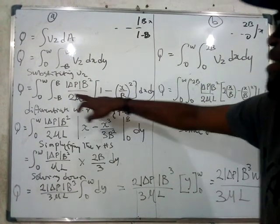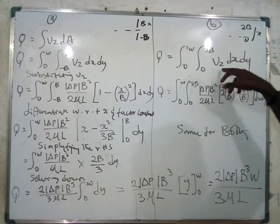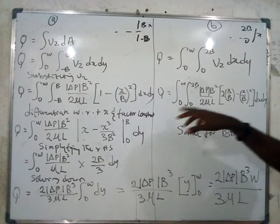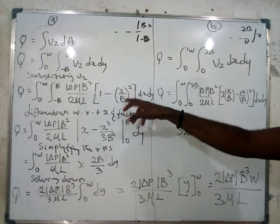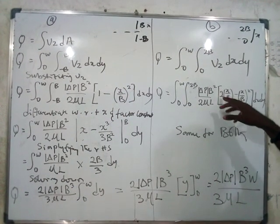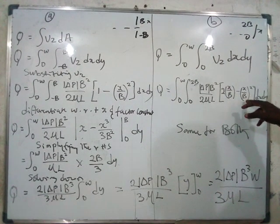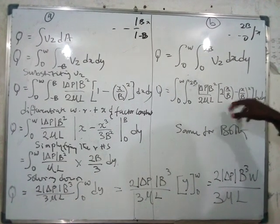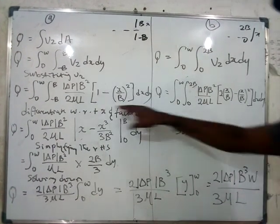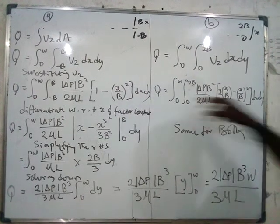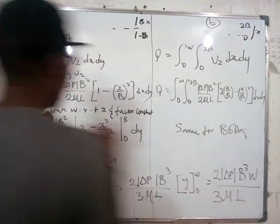Once you have that set up, everything simplifies. In place of vz, this is the expression we got in the last class. For part b we place the vz we got for b. Notice that this is the same as the other, only that here you have one minus (x/b)² whereas the other has 2(x/b) minus (x/b)². This is the one for b, and that is the one for a. Just substitute the appropriate vz and leave your dx dy.